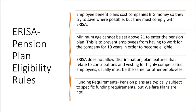Employee benefit plans cost companies significant money, so companies try to save wherever possible, but they must comply with ERISA. For example, the minimum age to enter a pension plan cannot be set above 21 years old. ERISA also prohibits discrimination — plan features relating to contributions and vesting for highly compensated employees must generally be the same for non-highly compensated employees. Pension plans are typically subject to specific funding requirements, but welfare plans are not, because pension plans typically involve both employee and employer money.